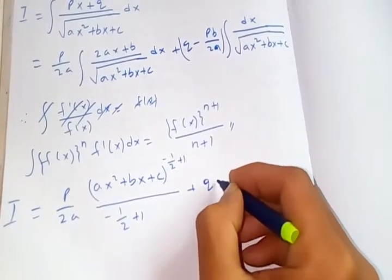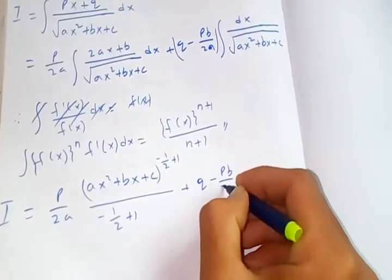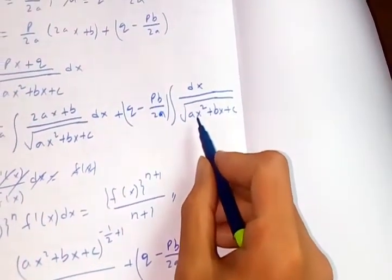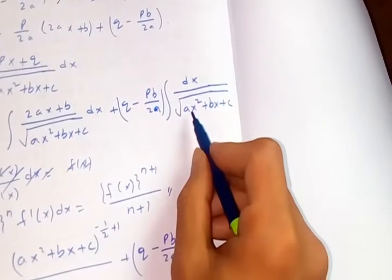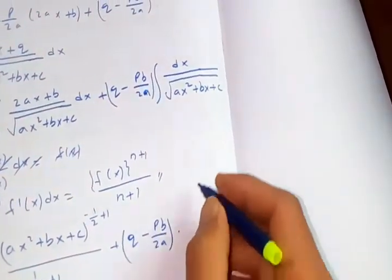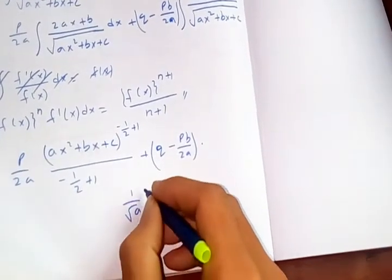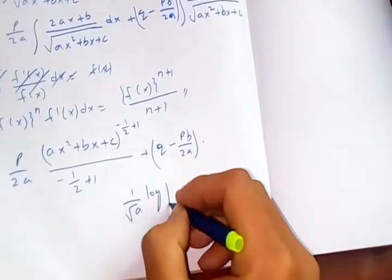q minus pb upon 2a. And this one, in the previous video, we have evaluated already, so this whole term is nothing but 1 upon root of a log of